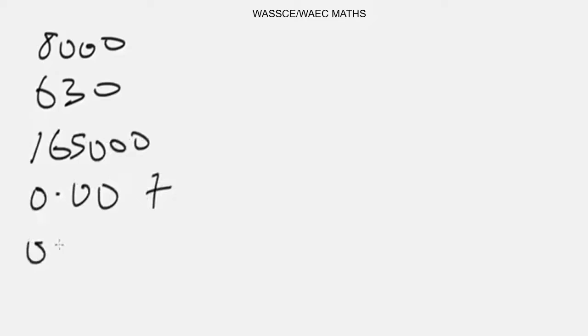Let's begin with these random examples. Let's say you are given 8000, you are given 630, you are given this value, let's say 165,000, you are given 0.007, you are given 0.0066.